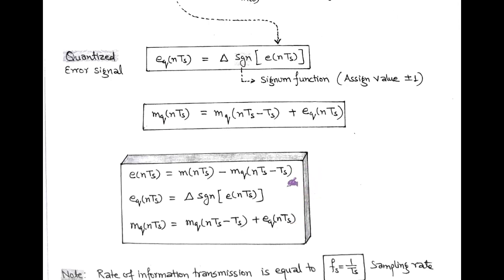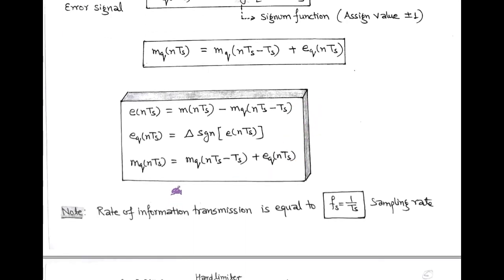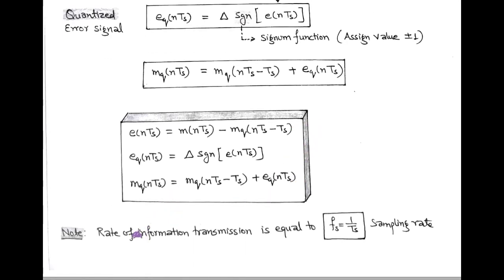We note that in Delta Modulation, information is transmitted at the rate of the sampling frequency, which equals 1/TS, and this is called the sampling rate.